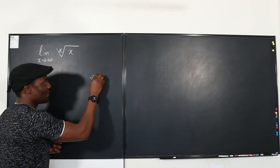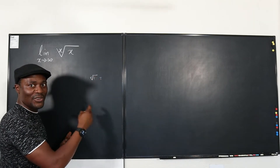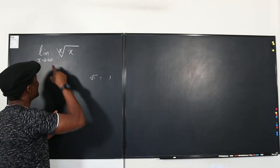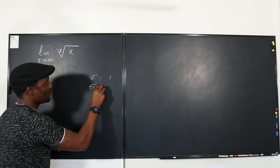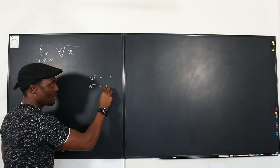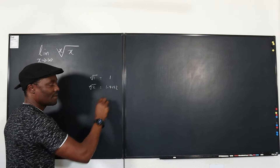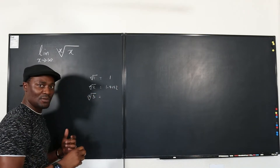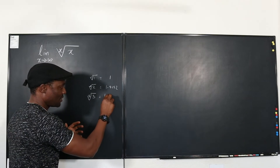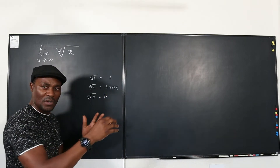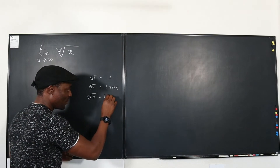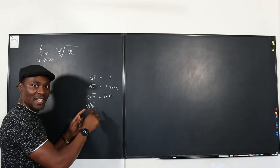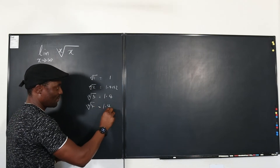What is the first root of one? Well, whatever root of one is always one. So then I'm going to go to the square root of two. Square root of two is 1.4142 thereabout. What about the cube root of three? The cube root of three is maybe 1.4 something. What about the fourth root of four? The fourth root of four is the square root of two, so that's another 1.4.